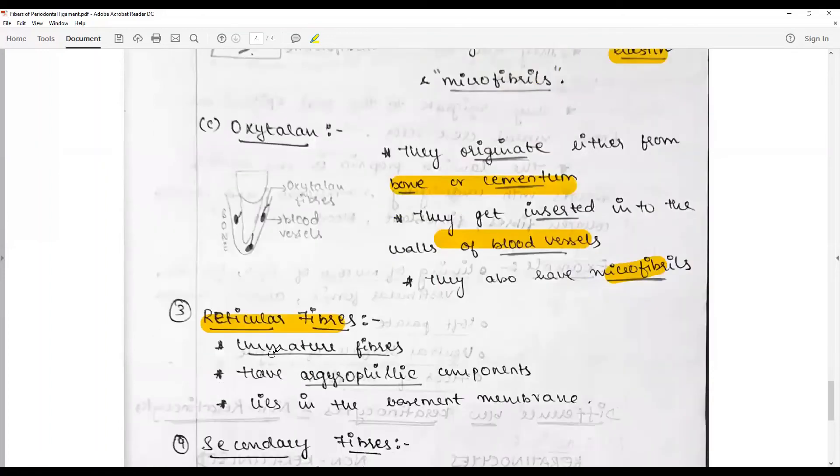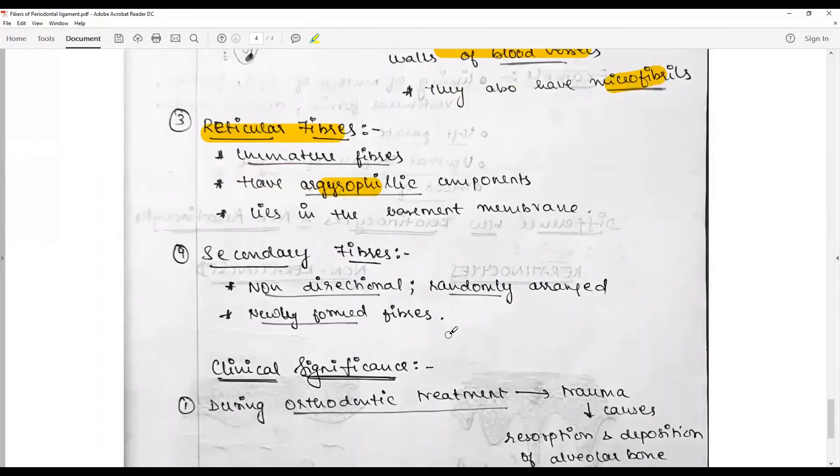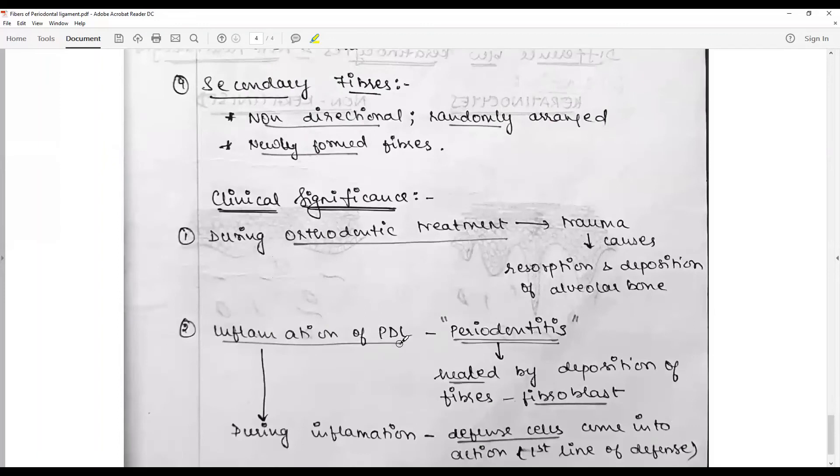Reticular fibers or immature fibers have an argyrophilic component and lie in the basement membranes. Secondary fibers are non-directionally randomly arranged newly formed fibers that cannot be characterized otherwise.